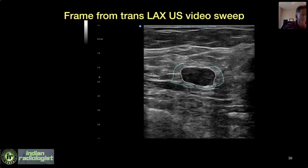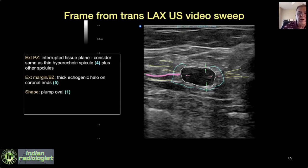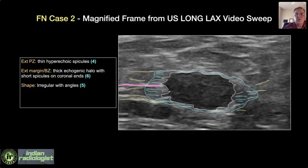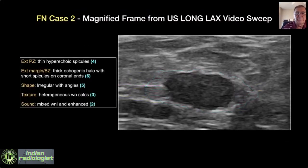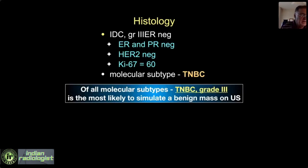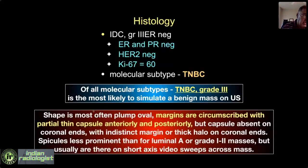The best way to see these spicules is a short axis video sweep — you can see hyperechoic spicules pulling in and going out as you sweep back and forth across the lesion; it's much more apparent than on any still image. The yellow lines show the hyperechoic spiculations. This was a grade 3, ER/PR-negative, HER2-negative, triple negative cancer with KI67 of 60%. The two still images originally looked falsely reassuring, but storing video loops and carefully looking at the frames allowed correct classification as BIRADS-5.